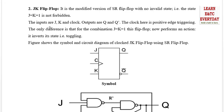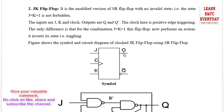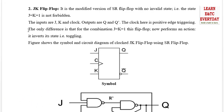The flip-flop inputs are J, K, and clock, whereas the outputs are Q and Q complement. The difference between SR and JK is that in SR we have an undefined state which we cannot define — because Q and Q complement both become 1, and we cannot determine whether it is a reset condition or the previous condition. But in JK, this is not the case.